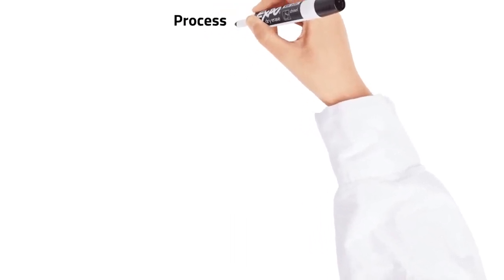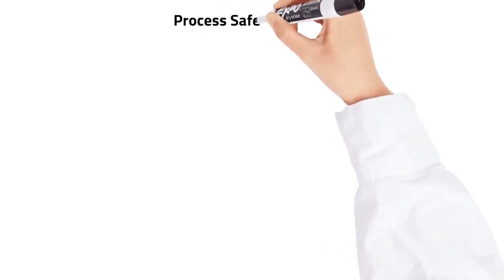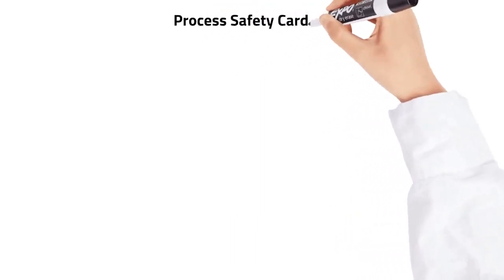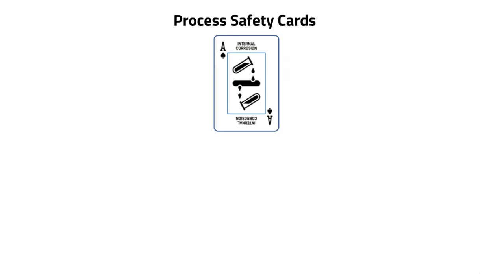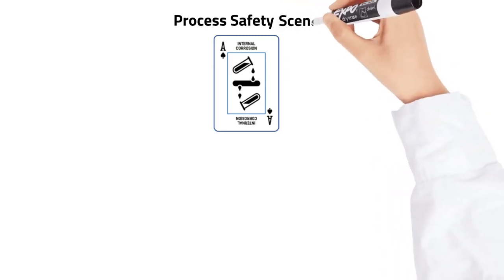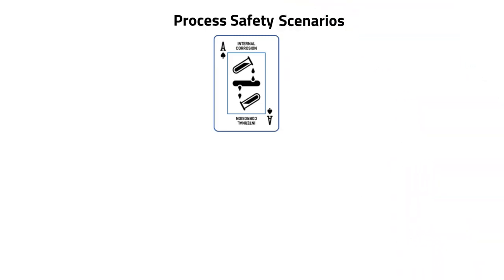The loss of containment cards represent 52 different types of event. Each card has an associated scenario which is visualized in bowtie format.